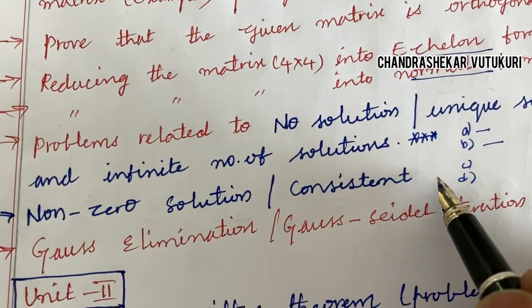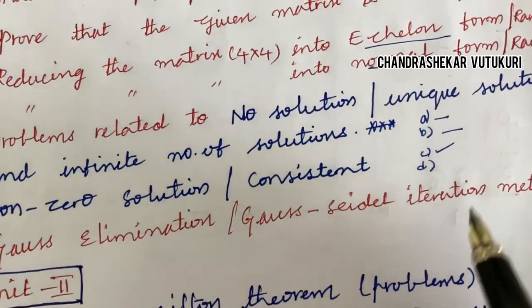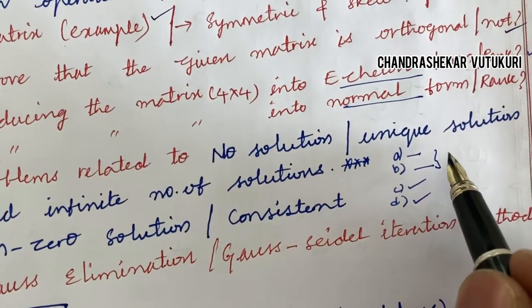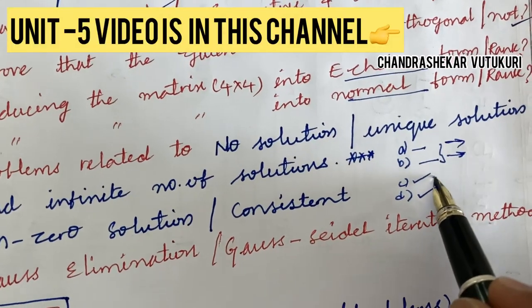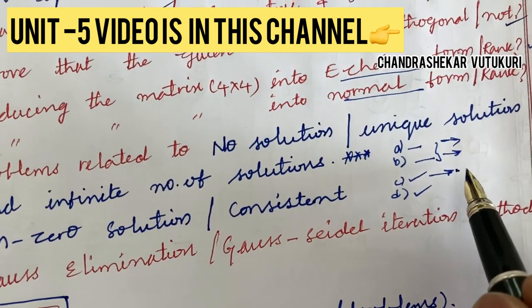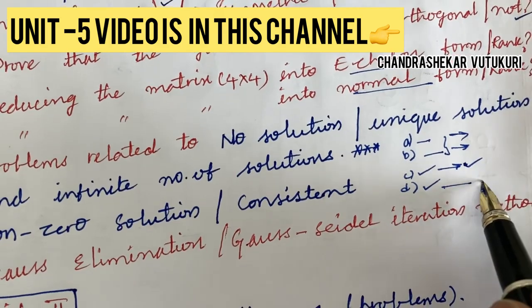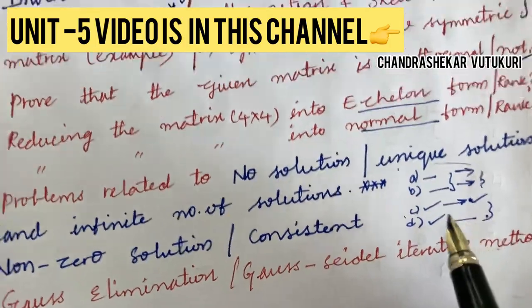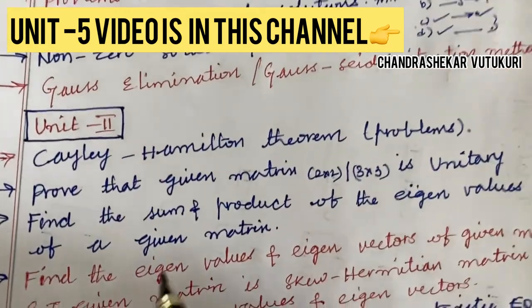In C and D you are going to get no solution, unique solution, or infinite number of solutions for a given problem, as well as finding the consistency of the matrix. The Gauss elimination or Gauss-Seidel iteration method problems may appear in the D question. So in A and B you may get the echelon form or normal form; consistency or no/unique solution problems; and later the Gauss elimination and Gauss-Seidel method. The question structure may vary. This is all about Unit 1.